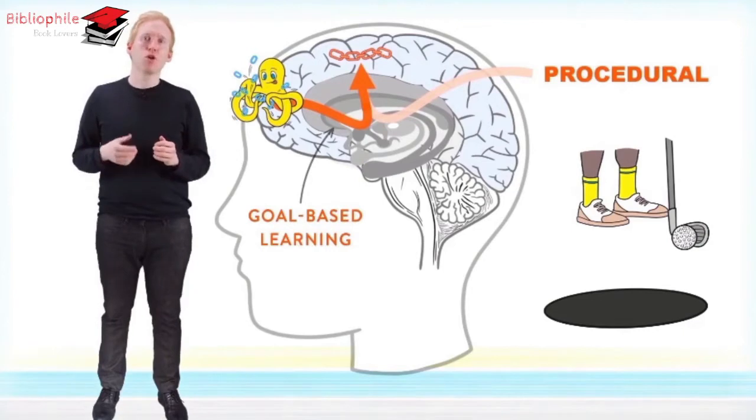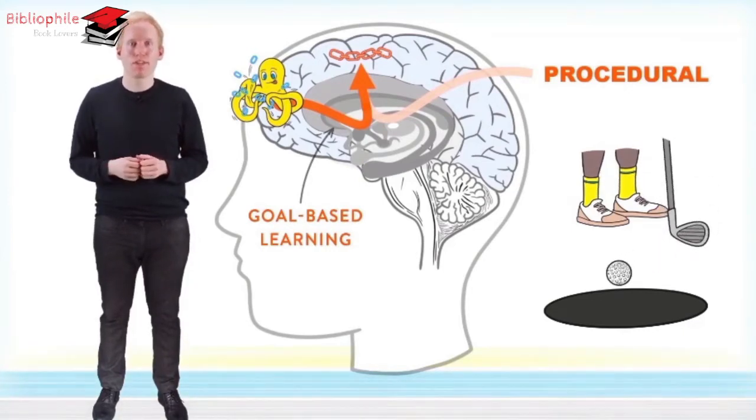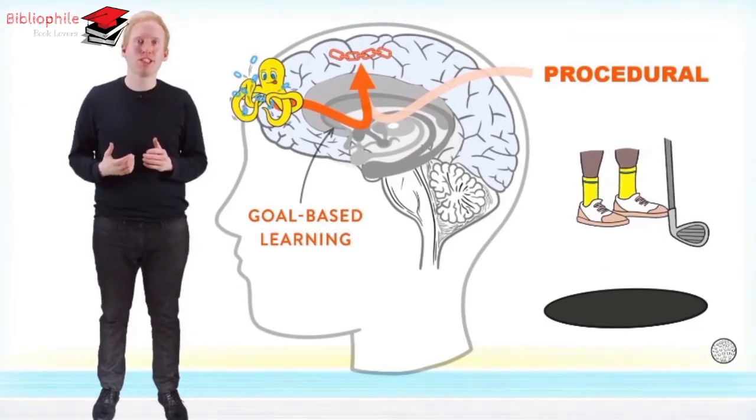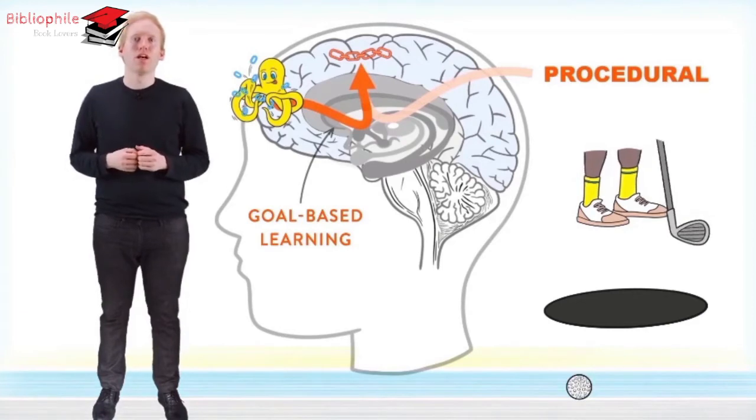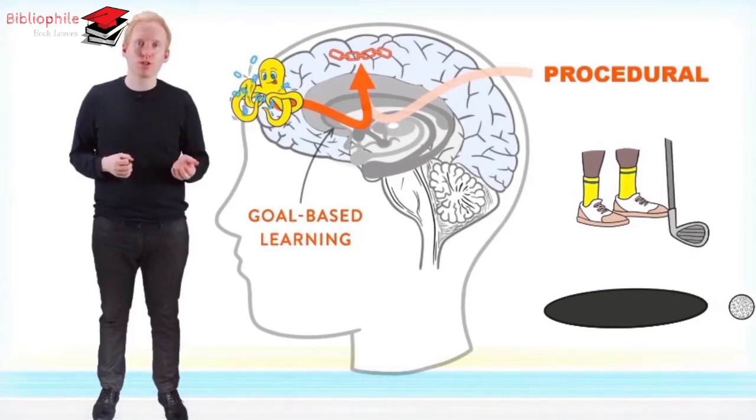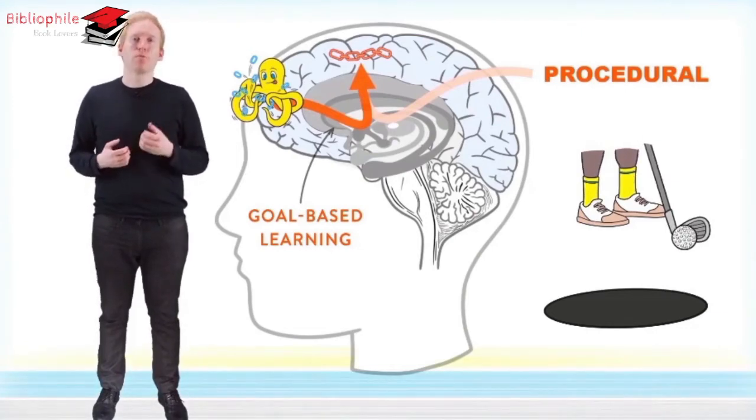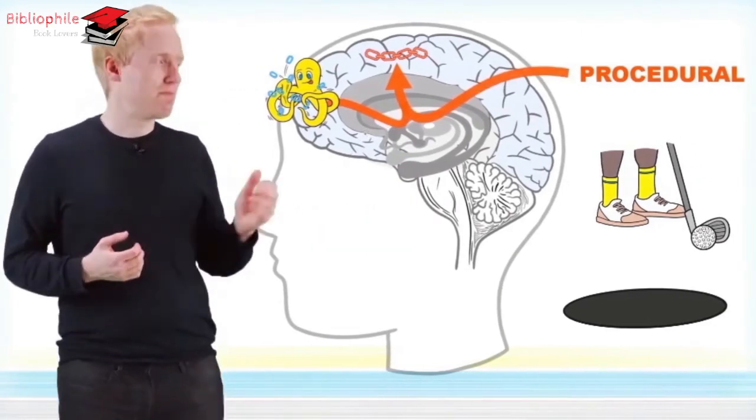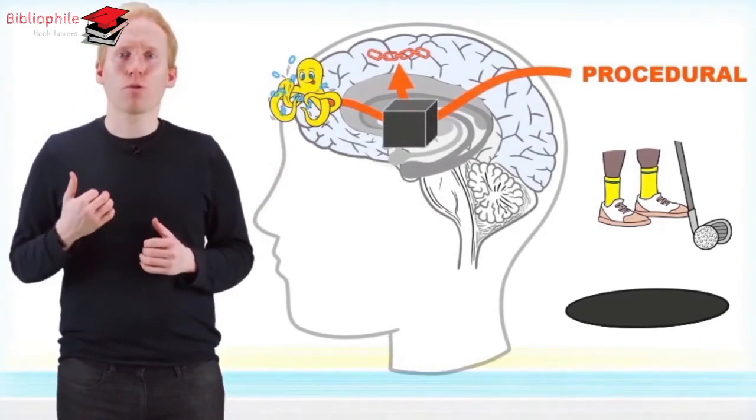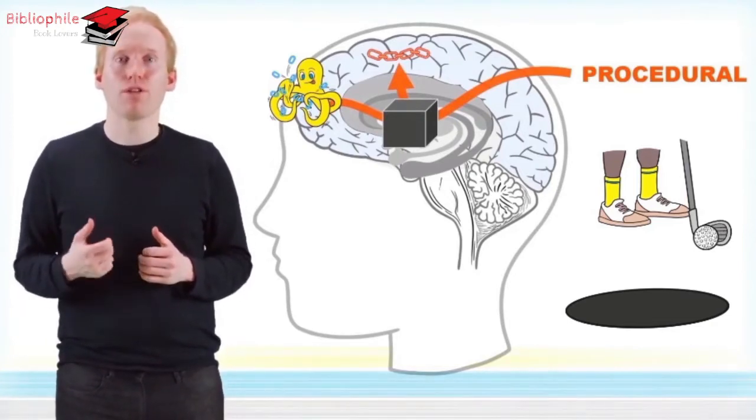You can see the goal-based learning in action as this man hits the golf ball. He's consciously using his working memory to tell his procedural system to hit that golf ball. Once the orders from working memory input go into the procedural system, the man doesn't really know what's going on. The procedural system is like a black box, a box that somehow, almost magically, gradually figures out how to put that ball into the hole.